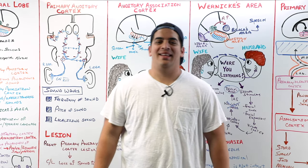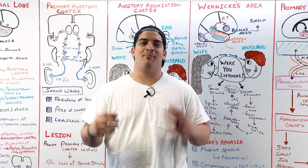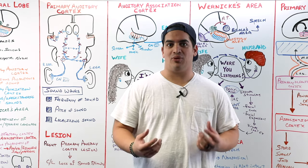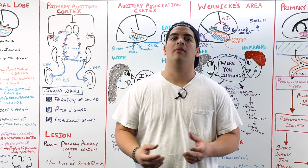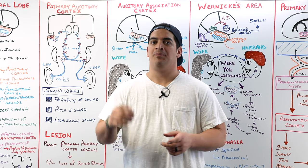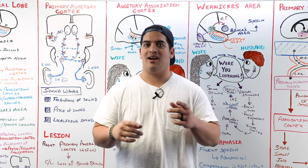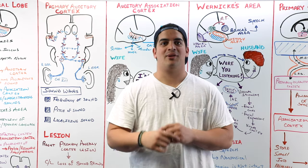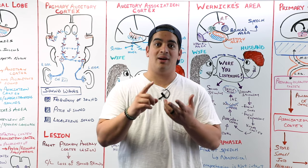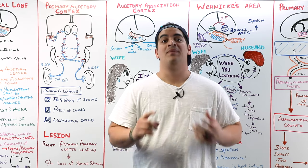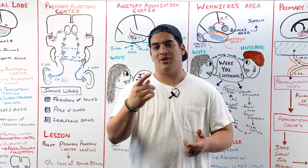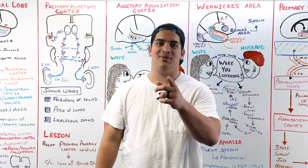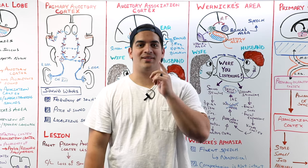Alright Ninja Nerds, in this video we talked about the temporal lobe and the insula of the cerebral cortex. I hope it all made sense and you enjoyed it. If you did, hit that like button, comment below, and please subscribe. Links to our Facebook, Instagram, and Patreon are in the description. Thank you, love you, and as always, till next time.